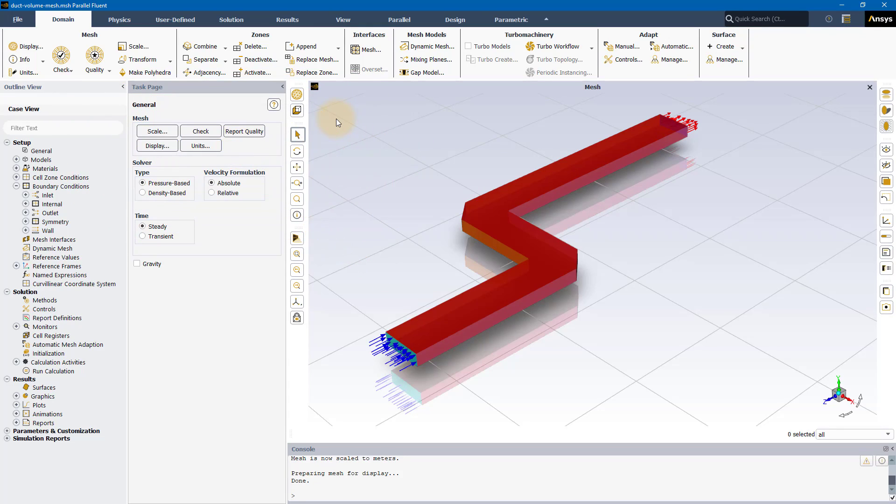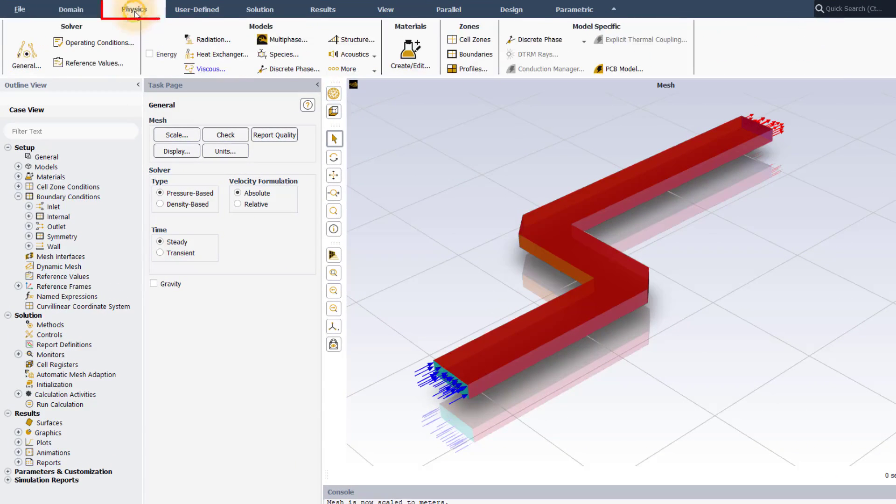However, sometimes you might want to include other physical models in your simulation. In the physics tab next to the solver group, you can see there is a models group. The most commonly used physical models are energy, which allows you to include heat transfer, and viscous for defining a turbulence model. There are other models that can be included in the simulation depending on the need, such as multiphase for modeling flows with more than one fluid.